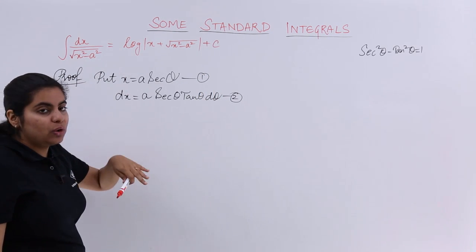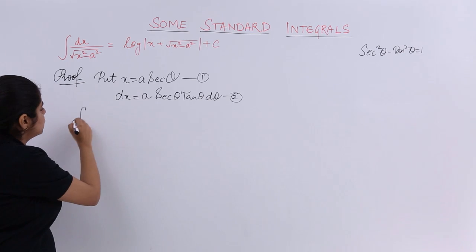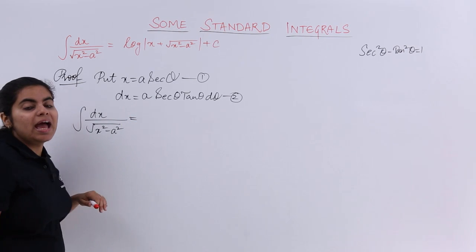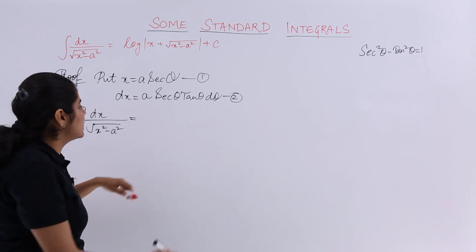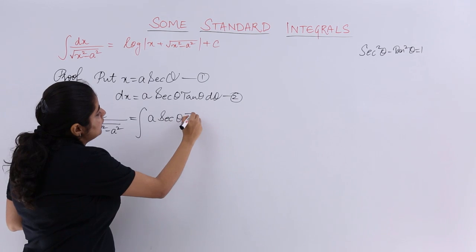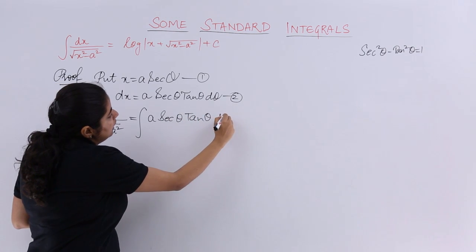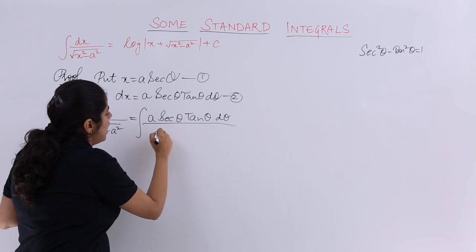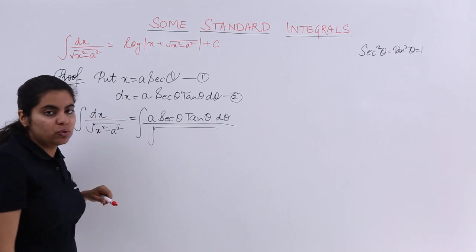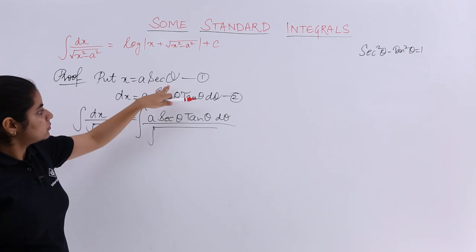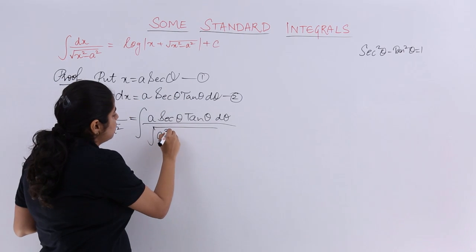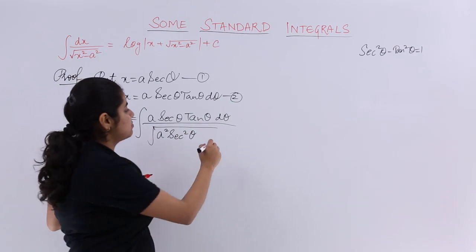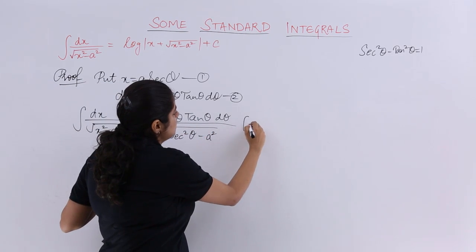Now again I have the question, it is nothing but dx upon under root x square minus a square. And dx is what? dx from 2 is a secant theta tan theta d theta, right? And in the denominator I have square root. I have made the square root x square means a square secant square theta minus a square means minus a square as it is. I hope these things are clear.